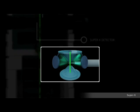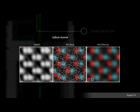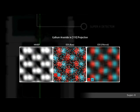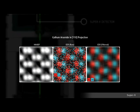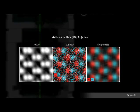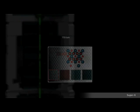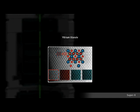In combination with a probe CS corrector, the SUPER-X detector enables atomic chemical mapping as shown in the example of gallium arsenide in 110 projection. The polarity of the structure can be visualized by the additional information of the different chemical content of the dumbbell structure. Even the difference in chemical composition between mixed and pure atomic columns can be detected as shown in this example of yttrium titanate.